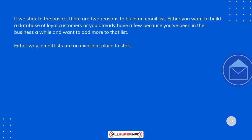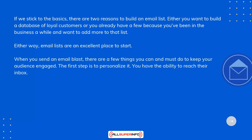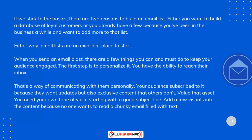When you send an email blast, there are a few things you can and must do to keep your audience engaged. The first step is to personalize it. You have the ability to reach their inbox — that's a way of communicating with them personally. Your audience subscribed because they want updates but also exclusive content that others don't. Value that asset. You need your own tone of voice, starting with a good subject line. Add a few visuals into the content, because no one wants to read a chunky email filled with text. Those are the basics.